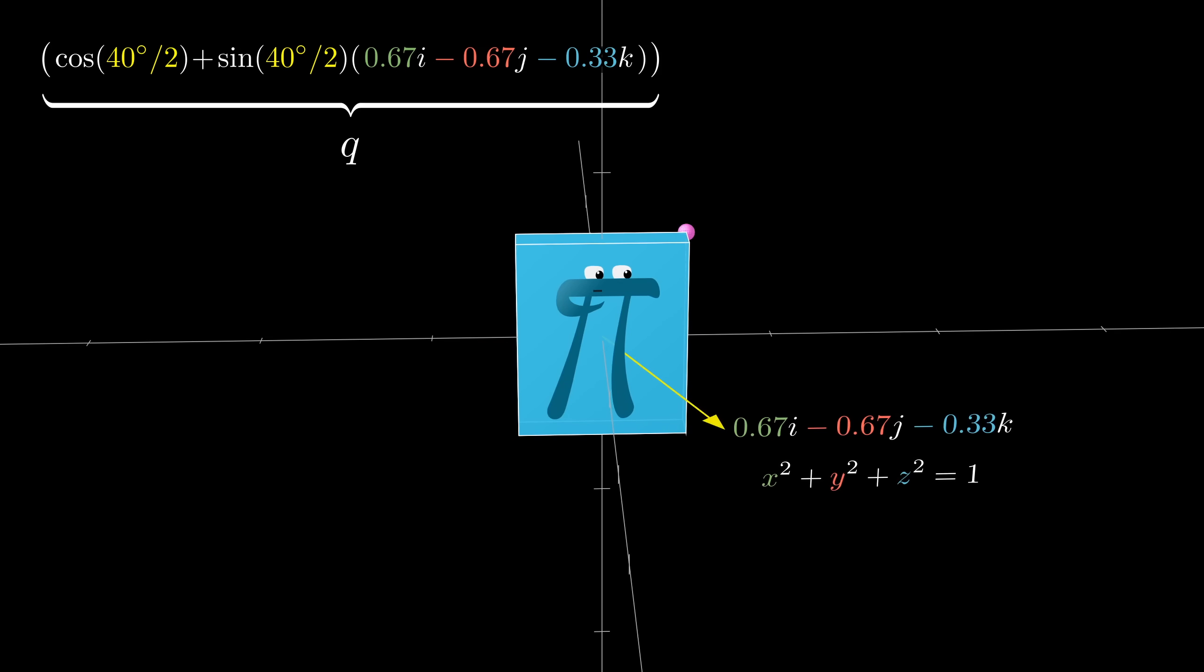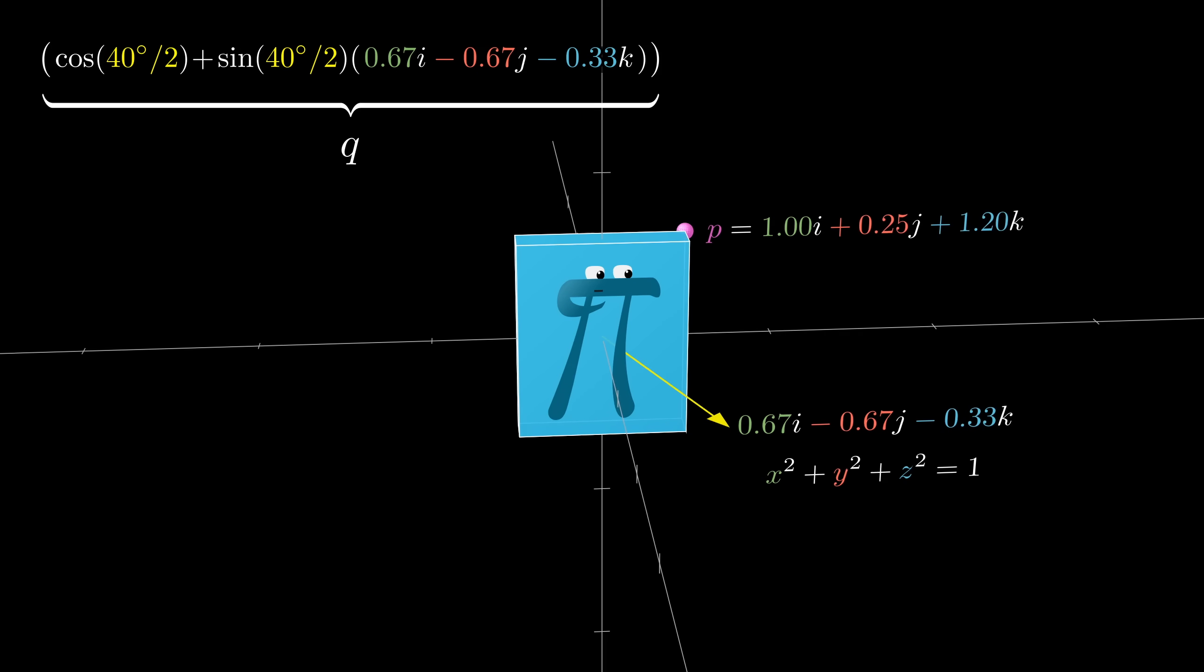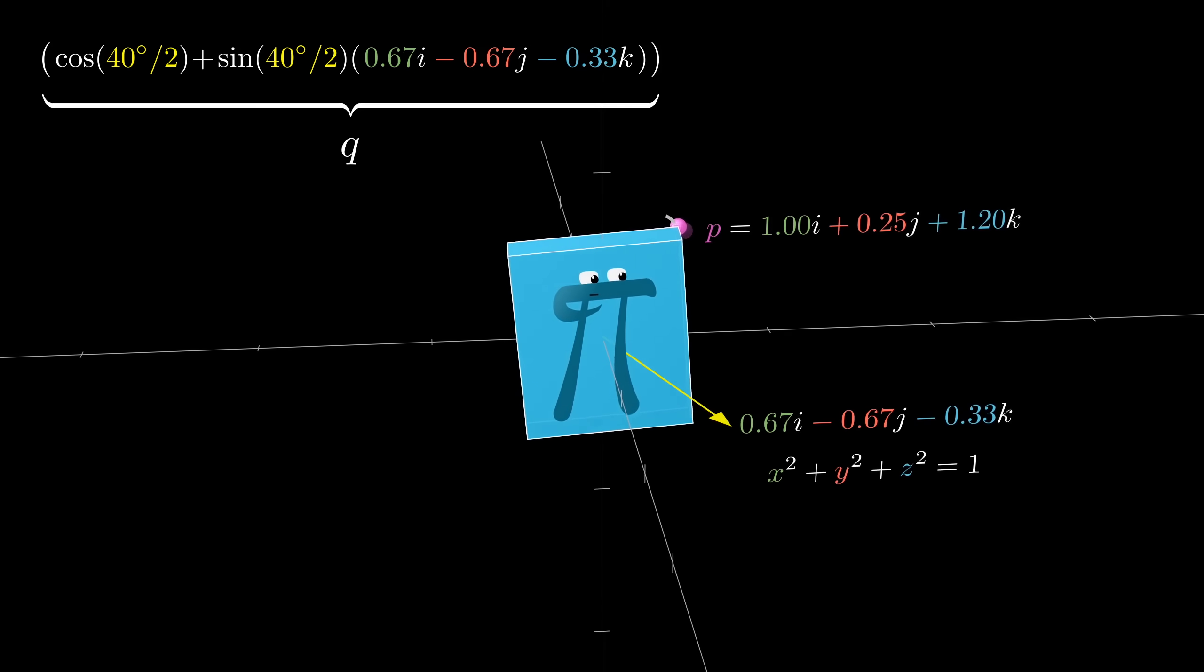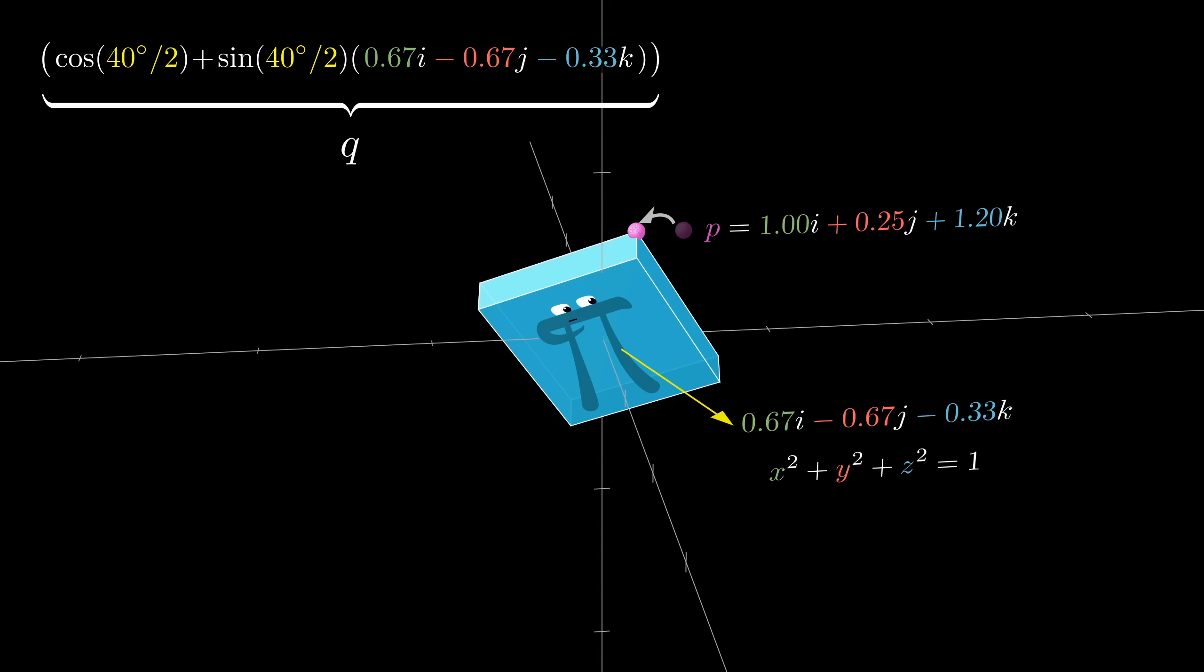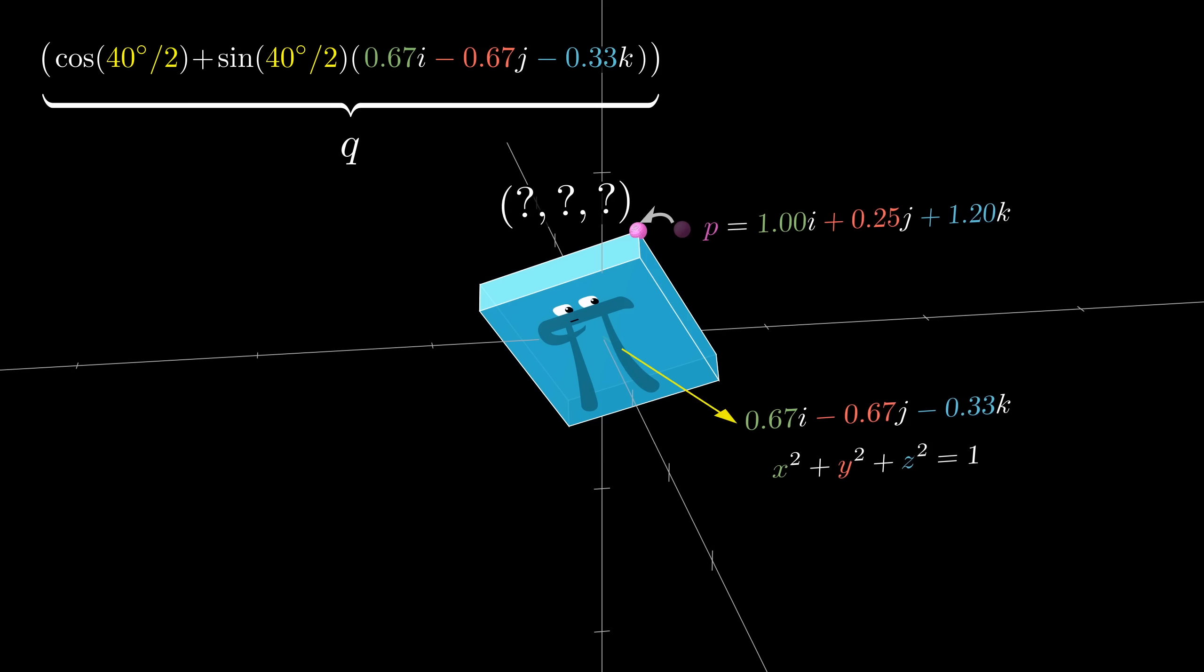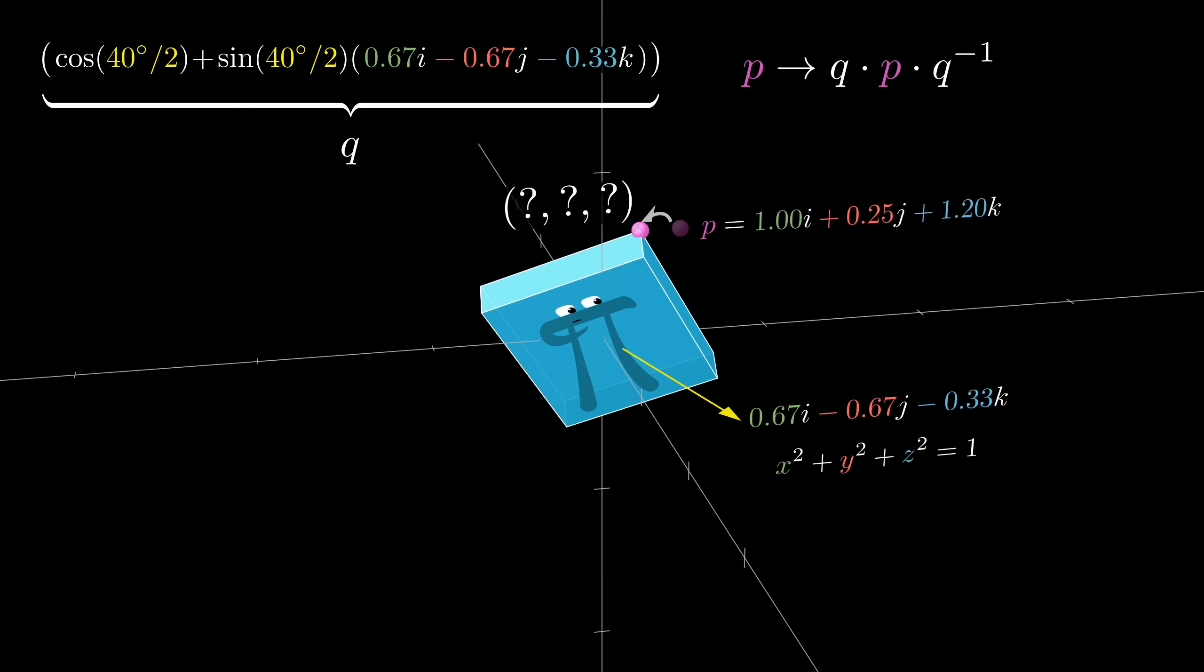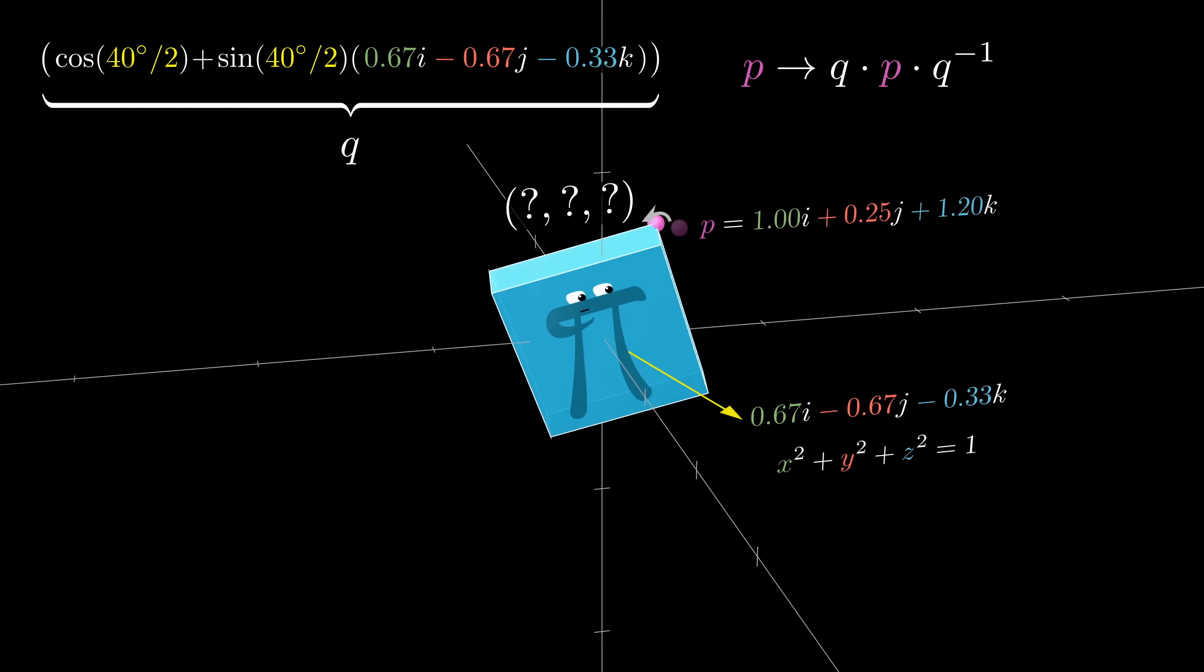Now let's say you have some 3D point, which we'll write with i, j, k components, and you want to know the coordinates you'd get when you rotate this point by your specified angle around your specified axis. What you do is not just a single quaternion product, but a sort of quaternion sandwich, where you multiply by q from the left and the inverse of q from the right.